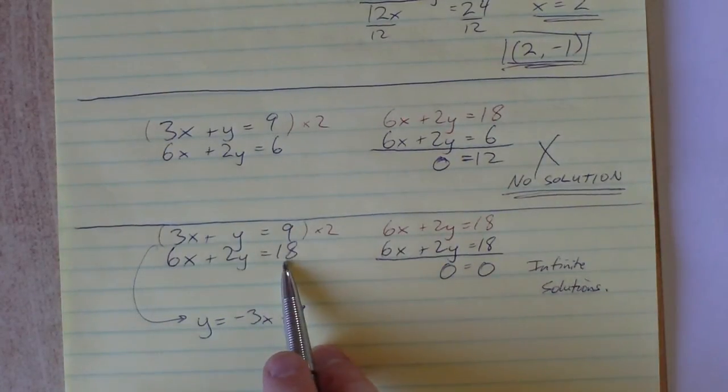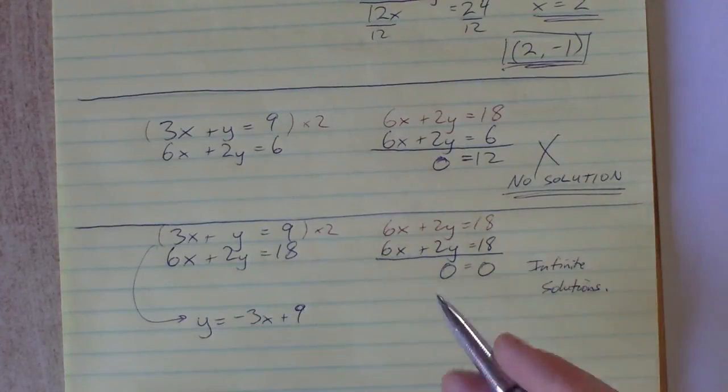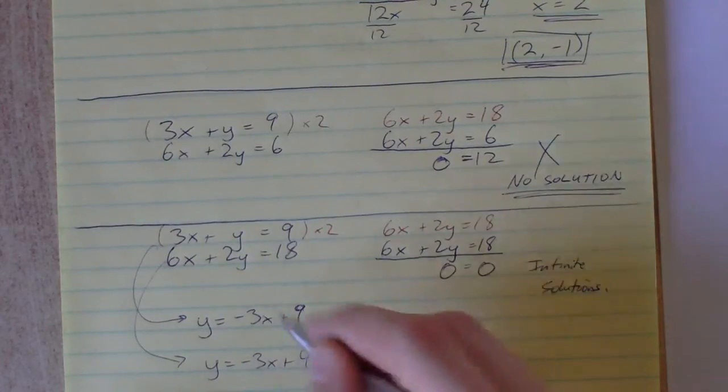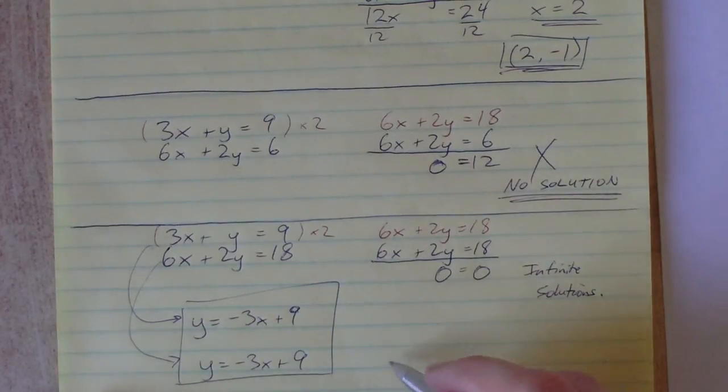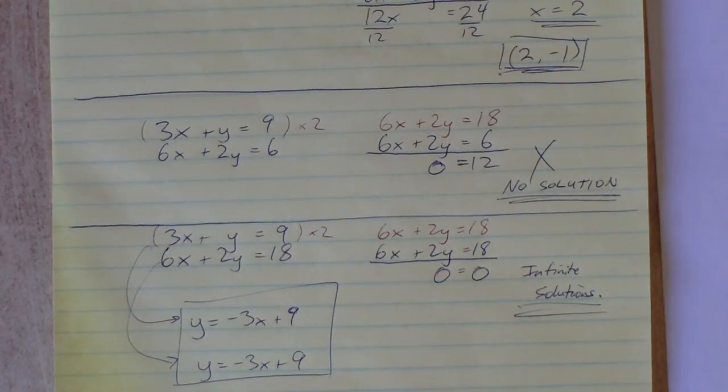If we take 6x plus 2y equals 18, solve that for y by moving the 6x over and dividing everything by 2, we also get y equals negative 3x plus 9. I'm not going to go through the algebra. You can prove that for yourself. Those two lines are going to end up being the same. They're going to intersect at every single point on those lines, so there are an infinite number of solutions.